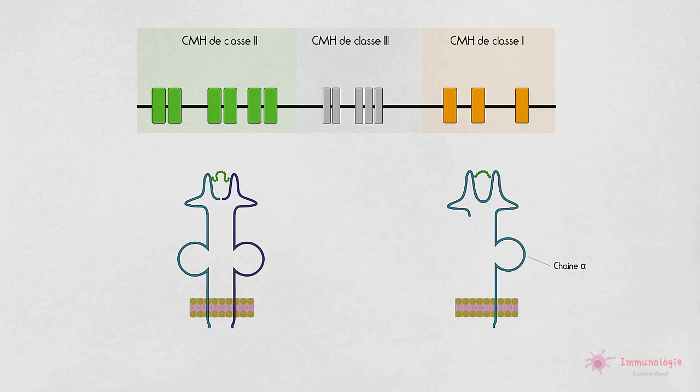Il existe trois gènes du CMH de classe 1 appelées HLA-A, HLA-B et HLA-C, qui codent pour trois types de molécules portant les mêmes noms.